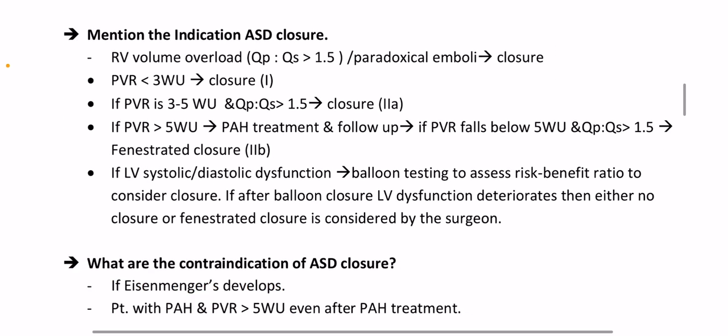What are the indications for ASD closure? RV volume overload with Qp/Qs ratio more than 1.5:1; paradoxical emboli. PVR less than 3 Wood units — close. If PVR is 3–5 Wood units and Qp/Qs more than 1.5:1 — closure is a Class 2 recommendation. If PVR more than 5 Wood units — pulmonary arterial hypertension treatment and follow-up; if PVR falls below 5 Wood units and Qp/Qs more than 1.5, fenestrated closure is considered.